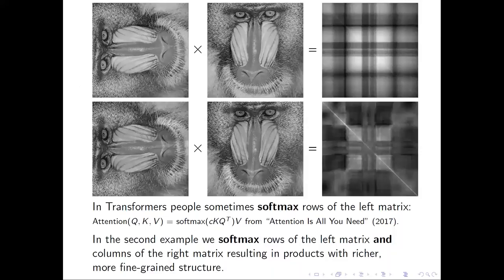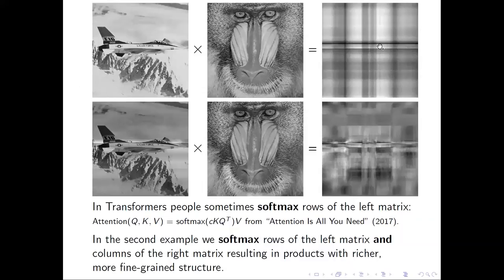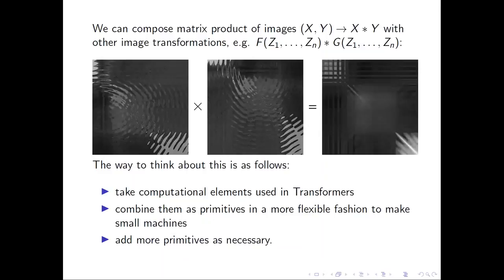Let's see a different example. Plane by monkey. Again, enough information. But if we apply softmax rows of the left matrix and columns of the right one, we have product with richer, more fine-grained structure. You can compose matrix product with other operations and you can build small machines using computational elements used in transformers and other primitives.